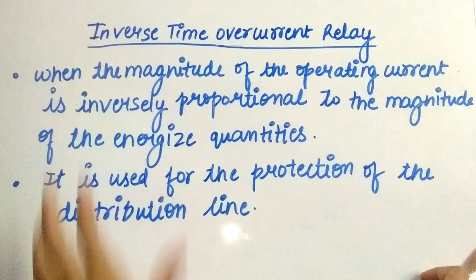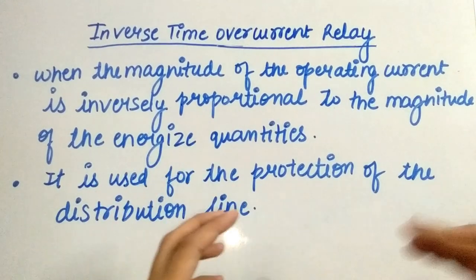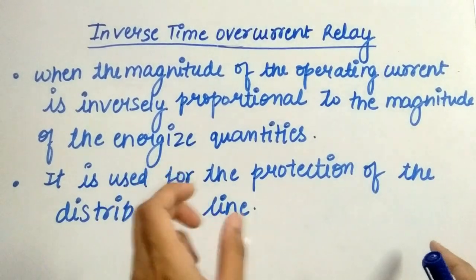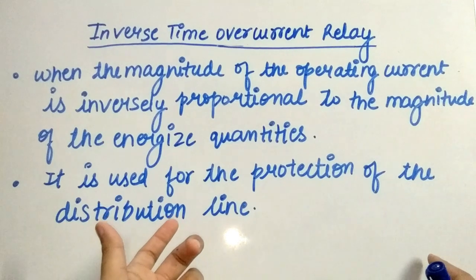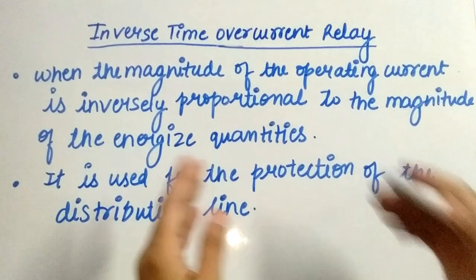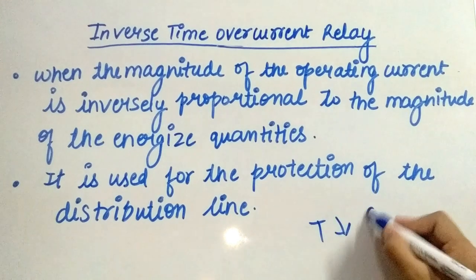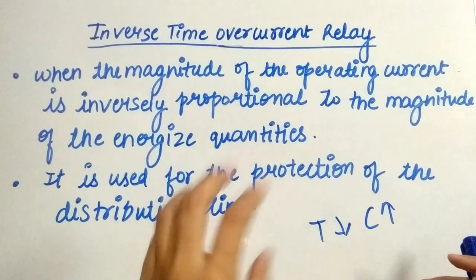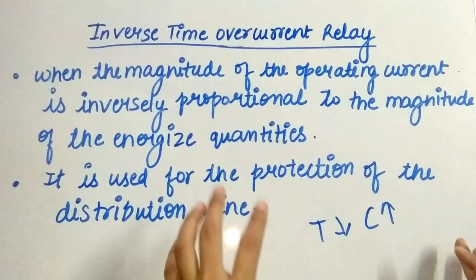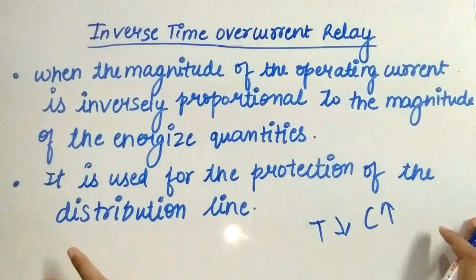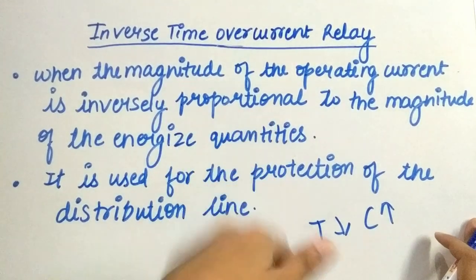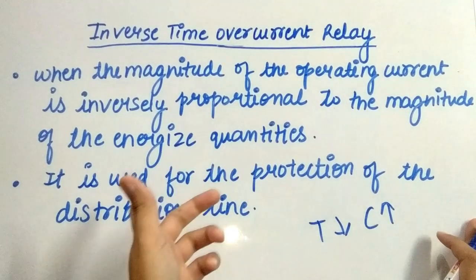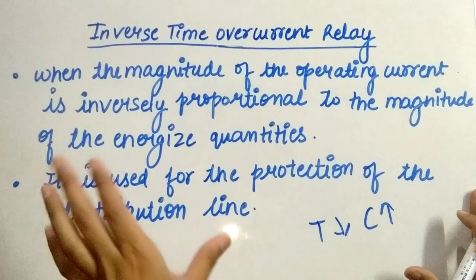Now let's understand the inverse time overcurrent relay. This relay operates only when the magnitude of its operating current is inversely proportional to the magnitude of the energized quantities. The operating time of this relay decreases with the increase in current. The operation of this relay totally depends on the magnitude of the current. This relay will not operate when the value of the current is less than the pick-up value. This relay is used for the protection of distribution lines.